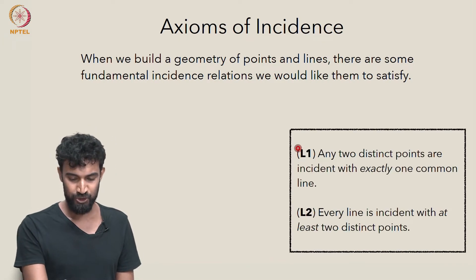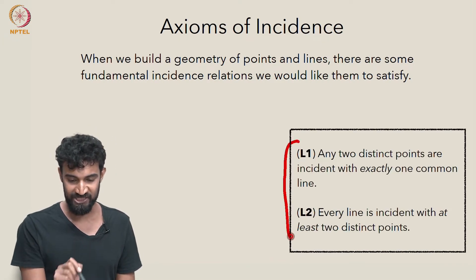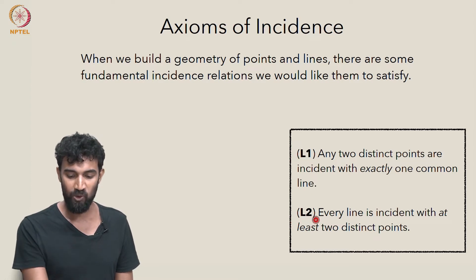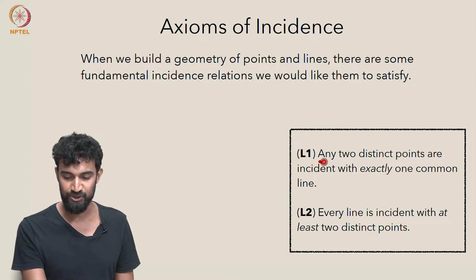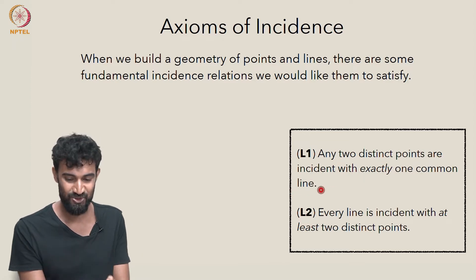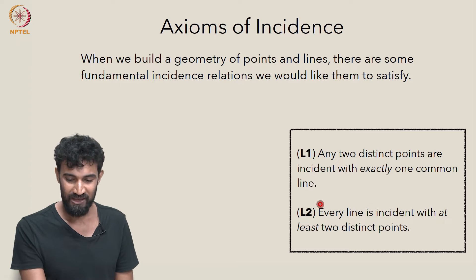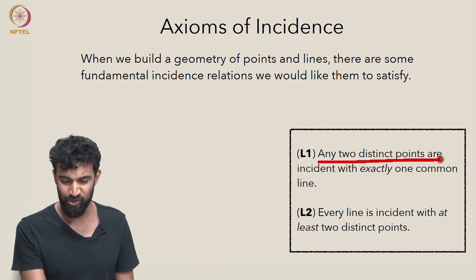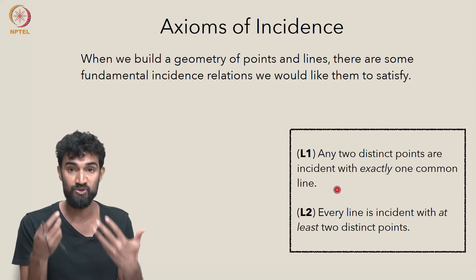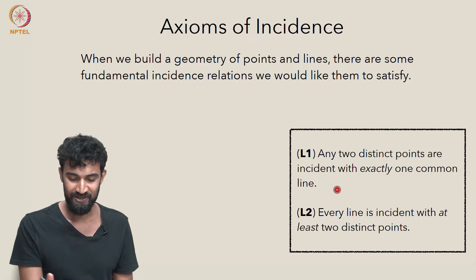There are two axioms in particular, which I'm calling L1 and L2. L1 states that any two distinct points are incident with exactly one common line. We saw that this was true in R2, and generally we want this to be true of any geometry we build of points and lines.